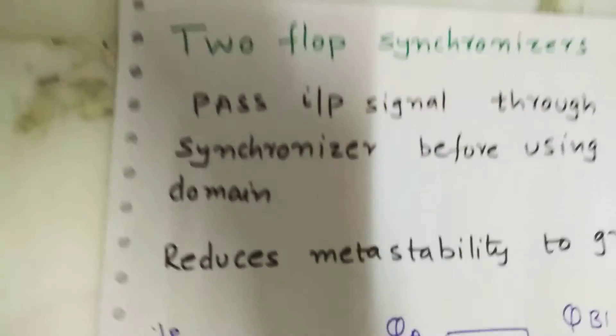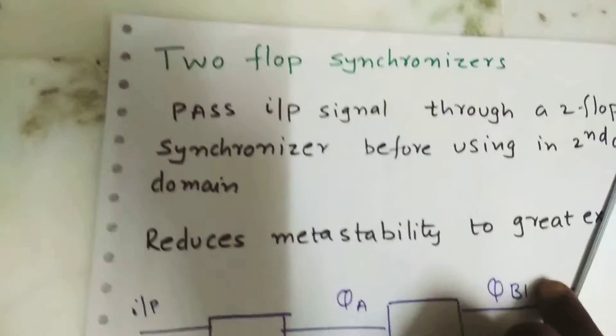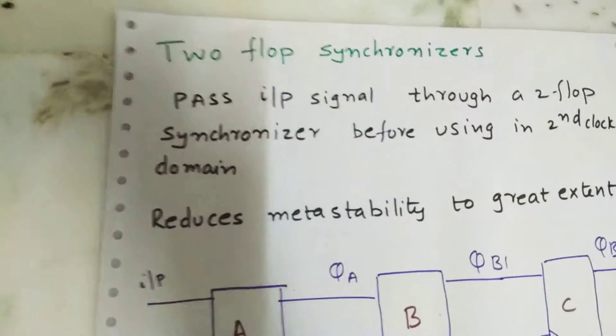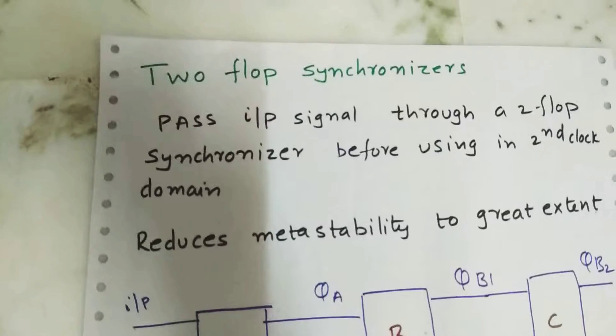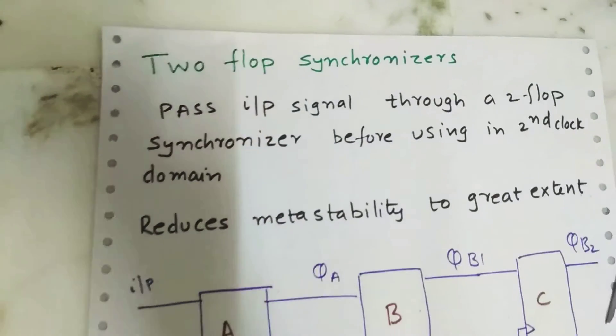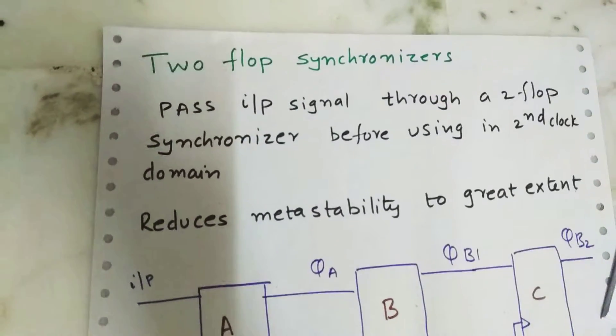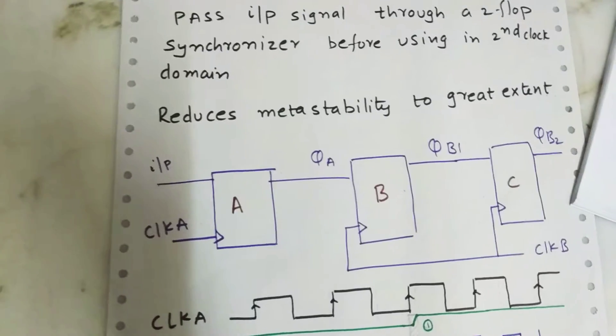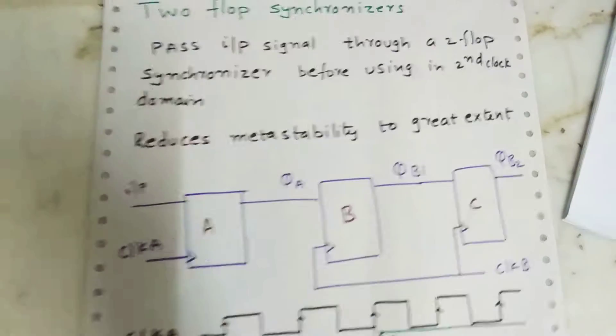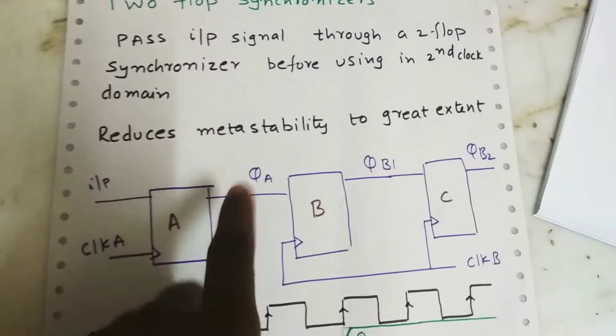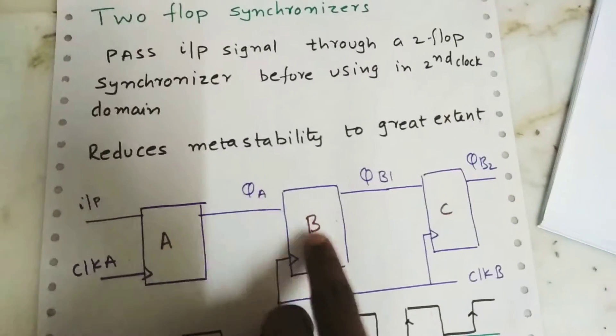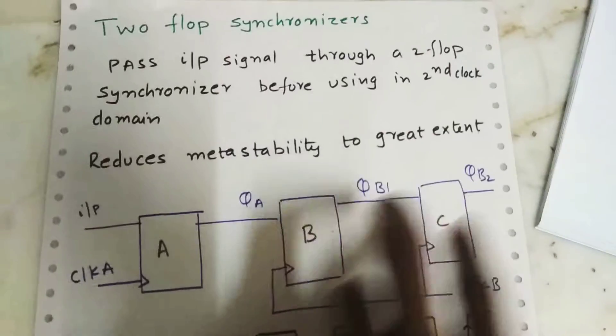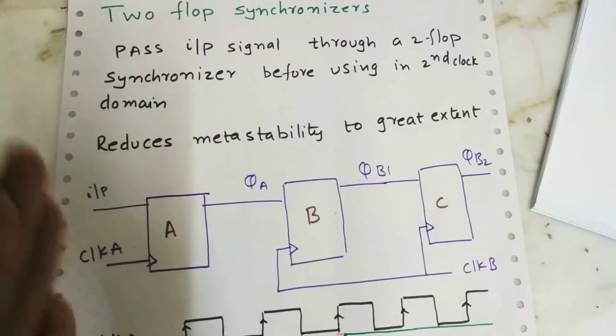To avoid this we are going to use two-flop synchronizer. Two-flop synchronizer can be used to avoid the metastability in more than one clock domain. So what we need to do is we need to pass the input to a two-flop synchronizer before using it in another clock domain. So if you want to use this, we need to pass it through a two-flop synchronizer before using in the clock B domain.